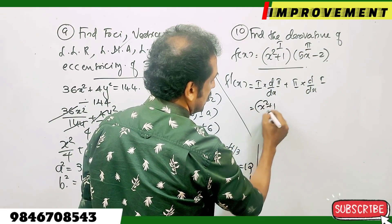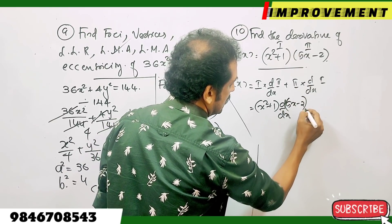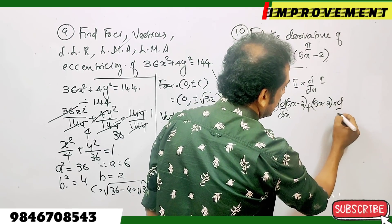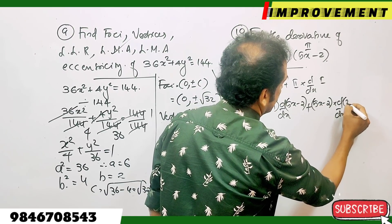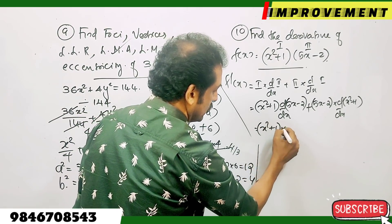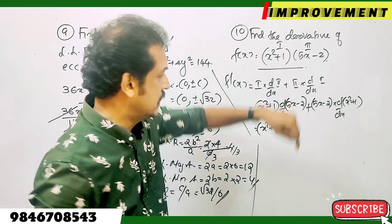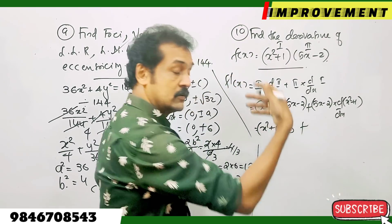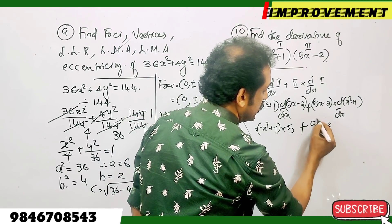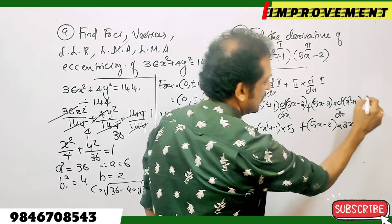Applying the product rule: (x squared plus 1) times d/dx of (5x minus 2) plus (5x minus 2) times d/dx of (x squared plus 1). The derivative of 5x minus 2 is 5, and the derivative of x squared plus 1 is 2x.